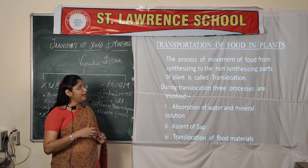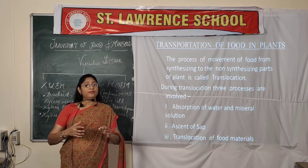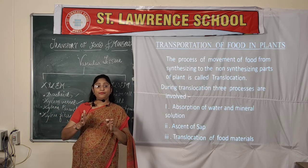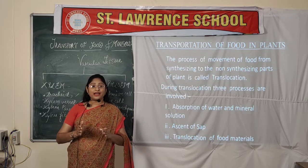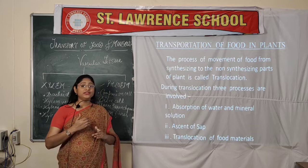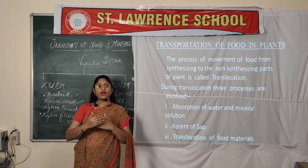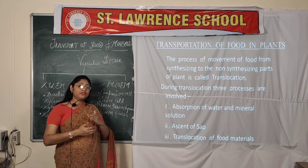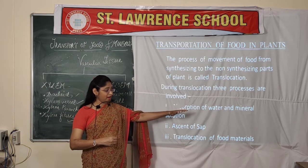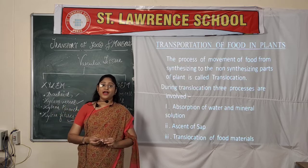The very important process of how transportation takes place — the common word used for transportation of food and water in plants is called translocation. It is the process of movement of food from the synthesizing to the non-synthesizing part of the plant. This involves a complex of processes and three important methods: absorption of water and minerals from the roots, ascent of sap, and translocation of food material to various parts of the plant.